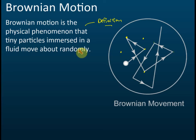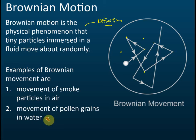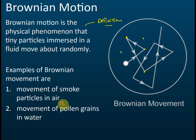Here are examples of Brownian motion. One example is the movement of pollen grains in water — that is the experiment done by Robert Brown. Another example, which your teacher may show you in the school laboratory, is the movement of smoke particles in air.